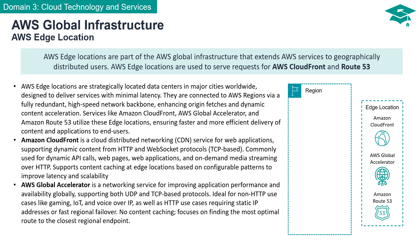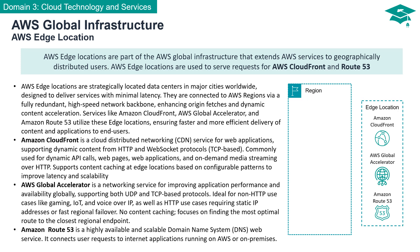AWS Global Accelerator focuses on finding the most efficient route to the closest regional endpoint, ensuring uninterrupted service. Amazon Route 53, another invaluable AWS service, is a highly available and scalable Domain Name System (DNS) web service. It's the bridge that connects user requests to internet applications hosted on AWS or on-premises infrastructure, playing an integral role in ensuring seamless access with robust scalability and availability.